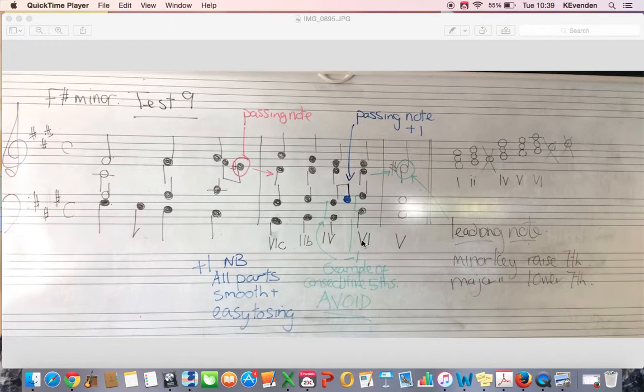Then you look at the next chord, chord six, and you will notice that between the bass and the tenor you've got a fifth. So you have what we call consecutive fifths.